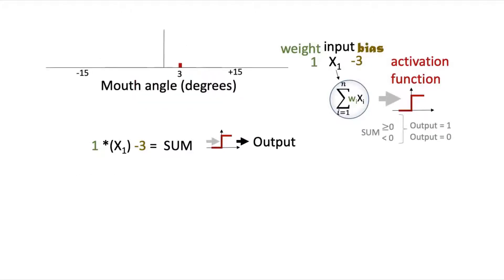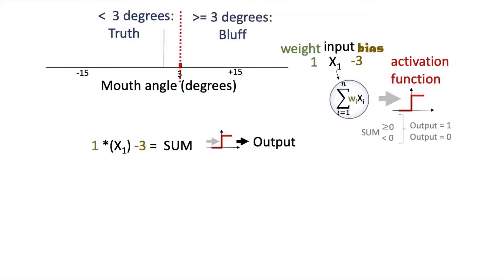Altogether, this means your perceptron works like this: when Sam's mouth angle is less than 3 degrees, the sum will be less than 0, and when that sum is fed through the activation function, the output will be 0, corresponding to Sam telling the truth. When the mouth angle is greater than 3 degrees, the sum is greater than 0, and applying the activation function gives an output of 1, meaning Sam is bluffing. So what the single perceptron model has learned is that when Sam's mouth angle is greater than or equal to 3 degrees, he's bluffing.